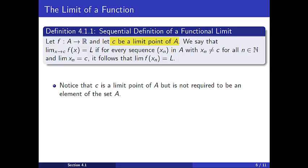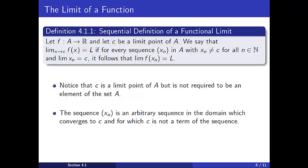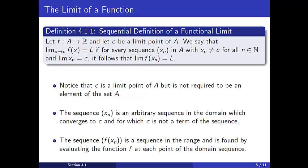The first thing to note is that the point c is a limit point of the domain A, but need not actually be in A. The second thing to note is that the sequence x sub n is an arbitrary sequence in the domain which converges to c, but no term in the sequence is actually c. Third, the sequence f of x sub n is a sequence in the range obtained by evaluating f at each of the terms in the sequence x sub n. Since each of the terms in x sub n are in A, the range sequence is well defined.